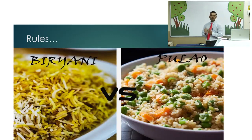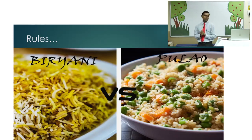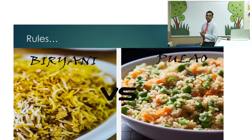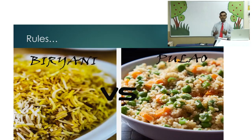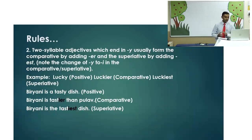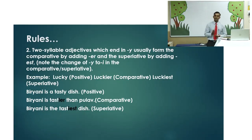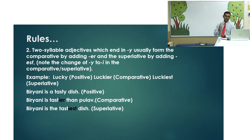Let's do a small activity. We have biryani and pulao — let's compare them using the adjective 'tasty'. The biryani is tastier than the pulao. In the superlative degree: biryani is the tastiest dish. So 'biryani is a tasty dish' is positive degree; 'the biryani is tastier than the pulao' is comparative; and 'the biryani is the tastiest dish' is superlative.